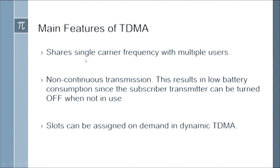The main features of TDMA include: sharing a single carrier frequency with multiple users; non-continuous transmission, which results in low battery consumption since the subscriber transmitter can be turned off when not in use; and time slots can be assigned on demand in dynamic TDMA.